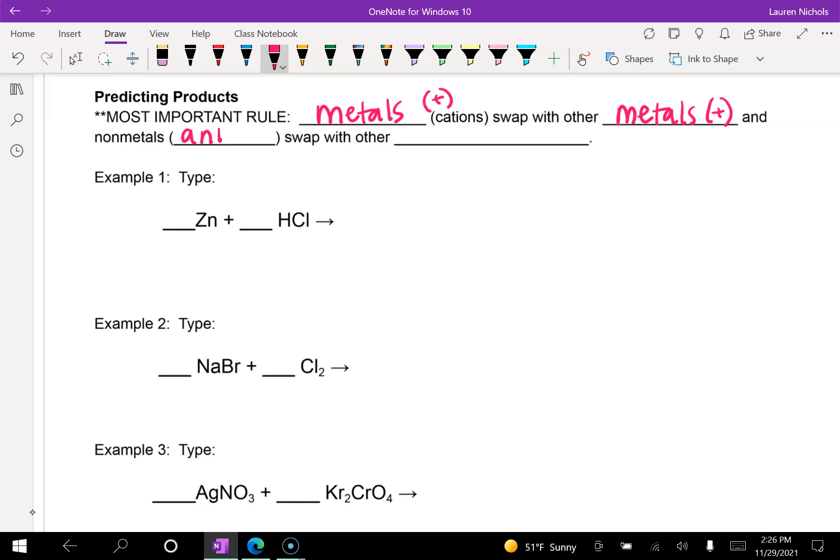And non-metals, which are the anions, and they're negative, swap with other non-metals, which are also negative. And so metals swap metals, non-metals swap with non-metals. And here's our key.